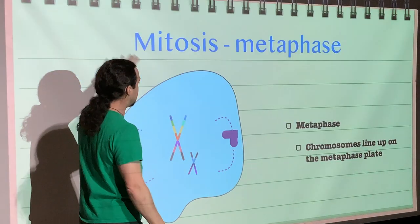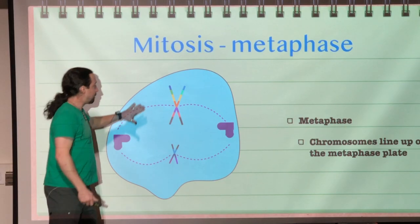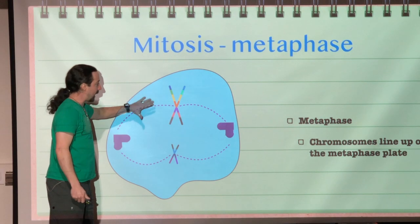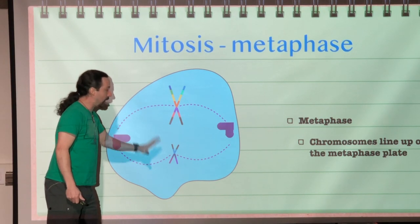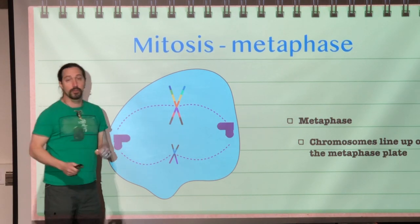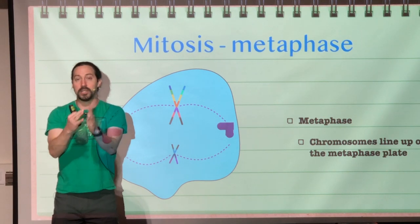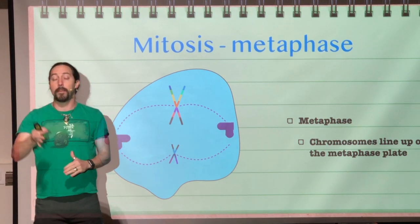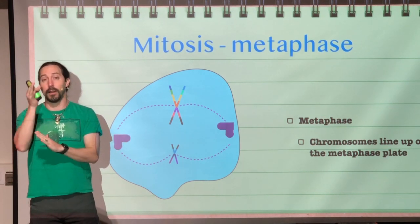In metaphase, the chromosomes line up along the equator of the cell. The mitotic spindle, which has attached to them, moves each of our replicated chromosomes right in line with each other. They now appear in a single file line.